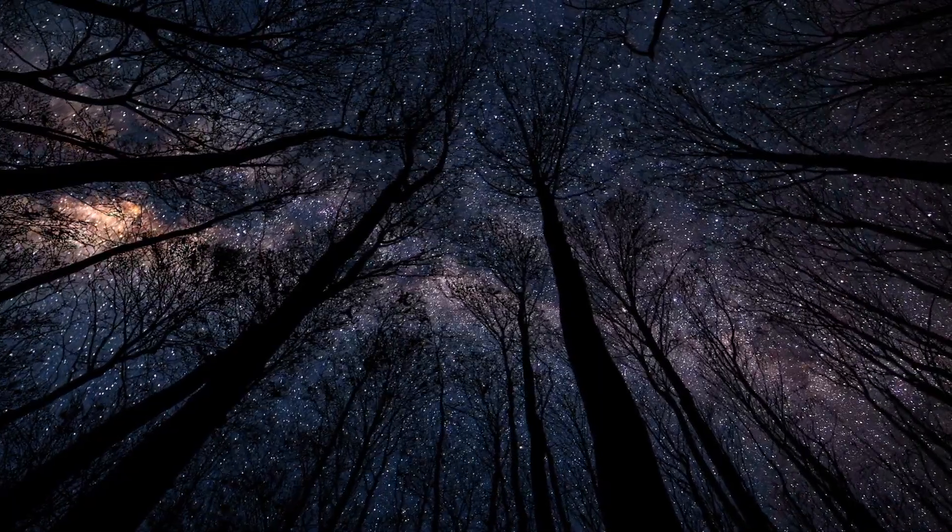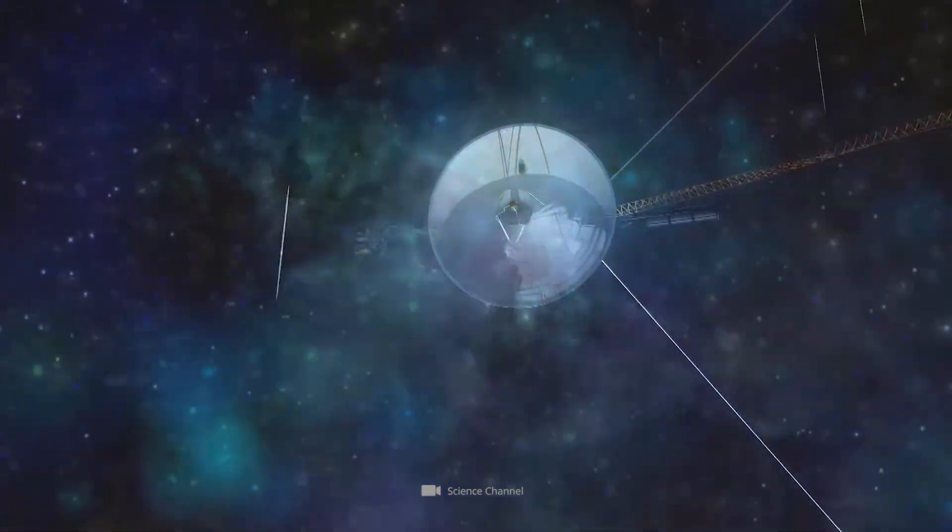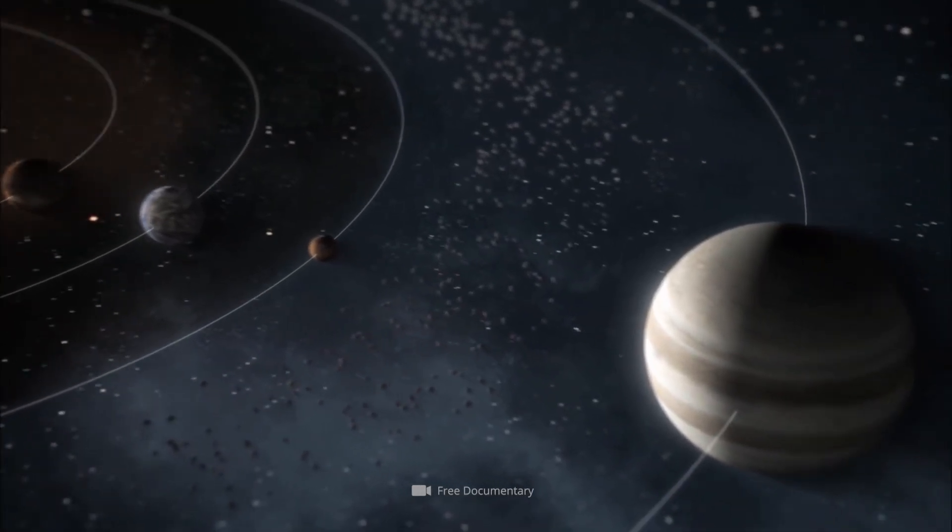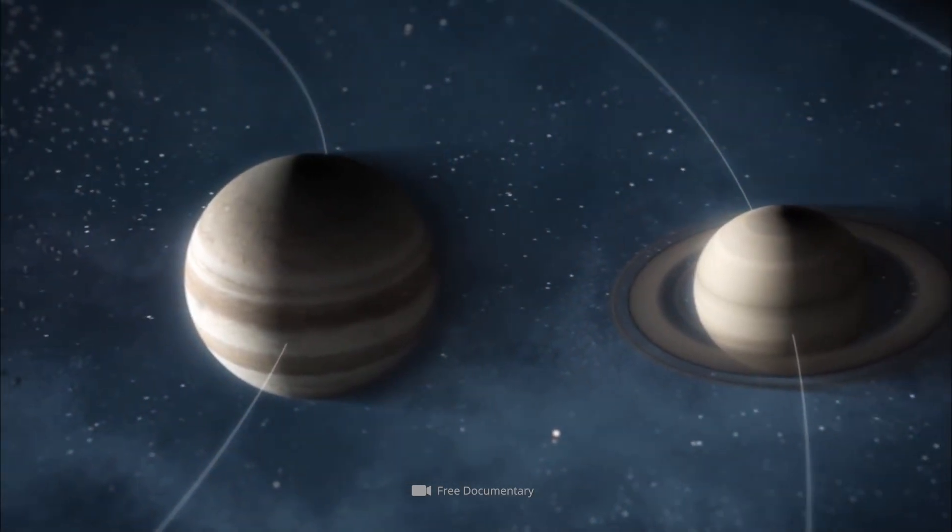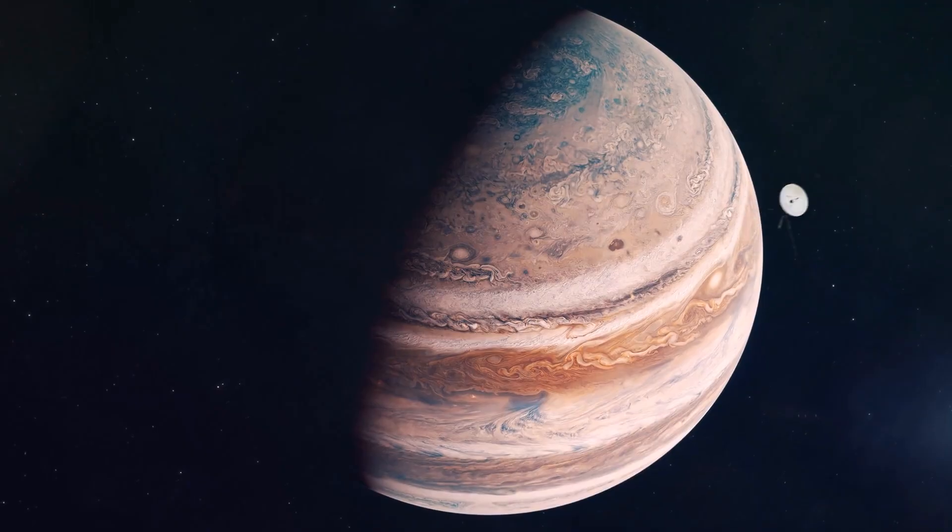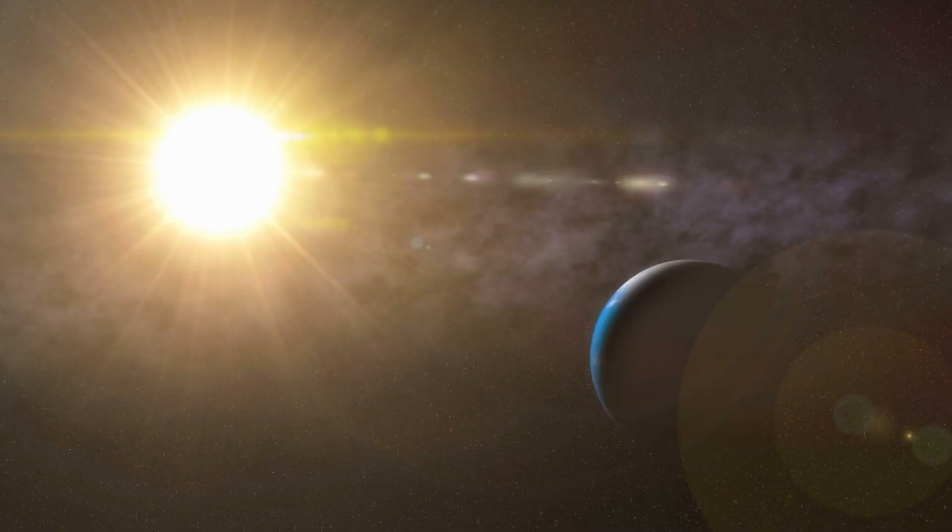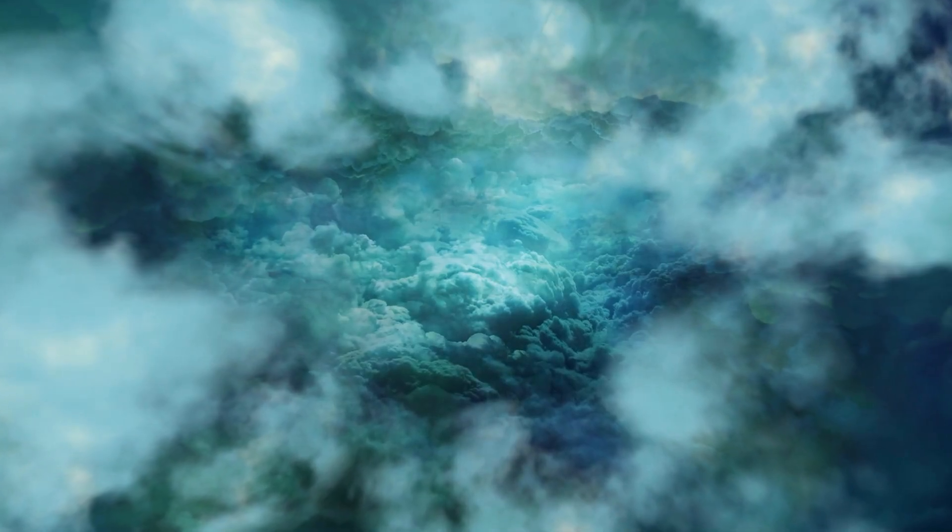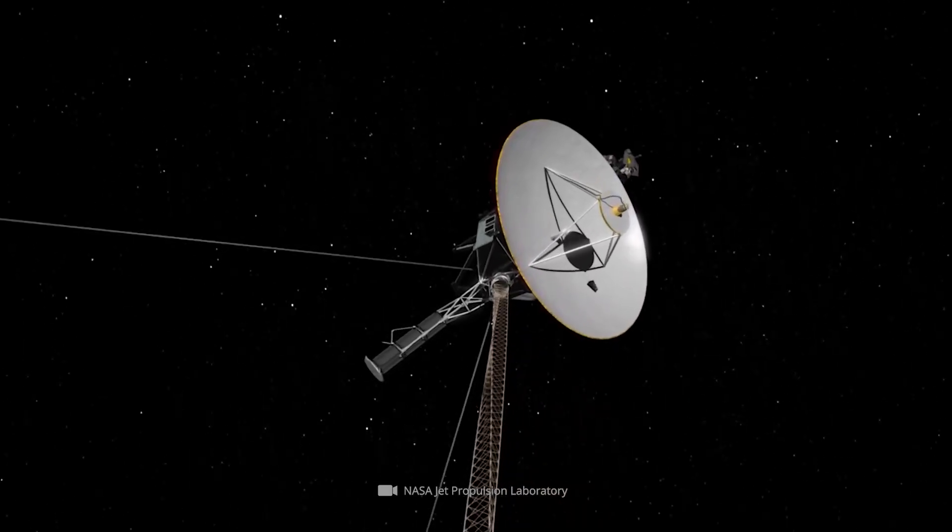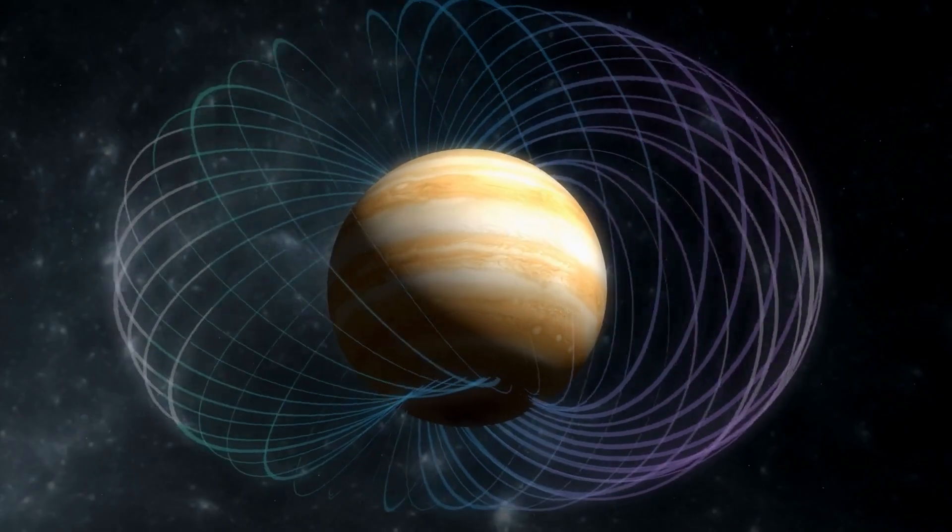While the spacecraft now transmit information to us from remote interstellar space, their original mission goals encompass completely different fields of application. To understand why, we should keep in mind that the outer members of our planetary system had only been sparsely studied in the late 1970s. In order to significantly deepen our knowledge of Jupiter, Saturn, Uranus, and Neptune, some basic characteristics of the celestial bodies were to be deciphered. In addition to the investigation of the atmospheres, this also included structural and chemical analyses, geomorphological investigations of the moons and the decoding of different magnetic fields.